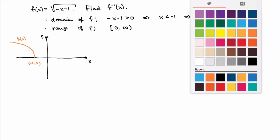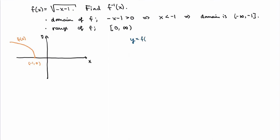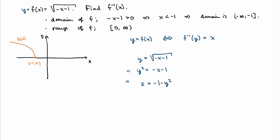Now how do we find the inverse function? By the definition, y = f(x) if and only if f⁻¹(y) = x. So we write y = √(−x − 1) and solve for x as a function of y. Squaring both sides gives y² = −x − 1, then solving for x gives x = −1 − y². That's the inverse function: f⁻¹(y) = −1 − y².